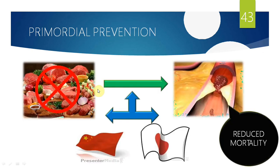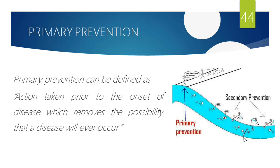For example, with coronary heart disease: controlling red meat consumption is primary prevention, whereas complete abstinence — total removal of red meat from the diet — is primordial prevention. So complete removal of the risk factor is primordial prevention, while modifying or controlling the risk factor is primary prevention.